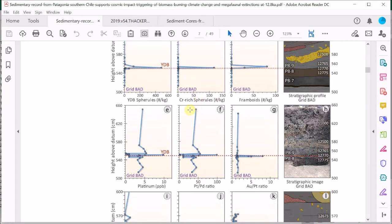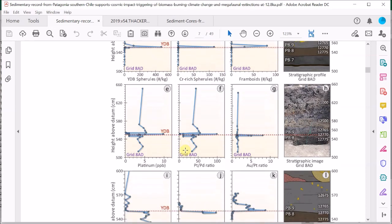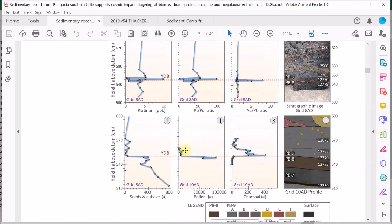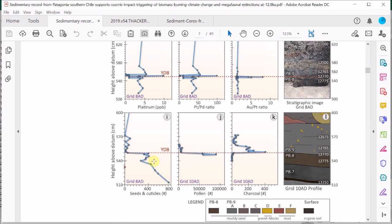And they also find a strong platinum spike right at the boundary, and a peak in charcoal along with sudden changes in pollen and the abundance of seeds and so forth, indicating a dramatic change in the environment. So it seems this boundary between PB8 and PB9 is clearly the Younger Dryas boundary.